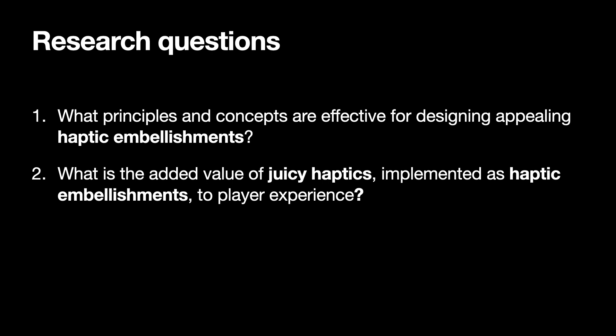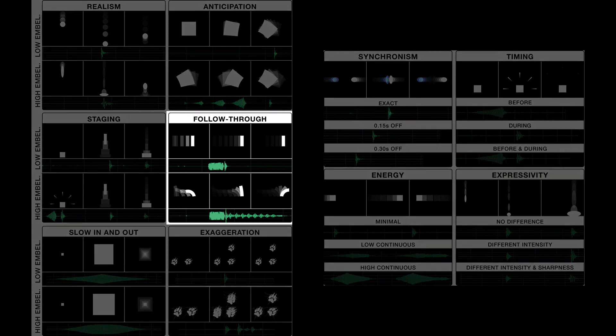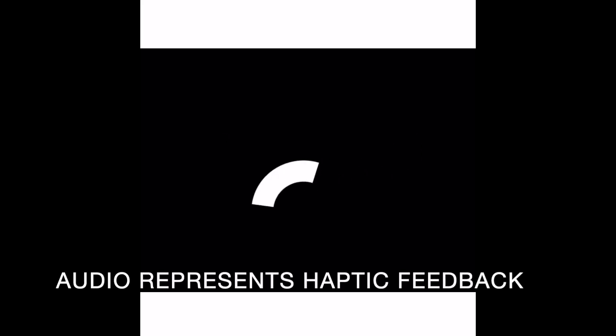For the first research question, we assemble 10 preliminary design principles for haptic embellishments. Here is a glimpse of examples of all 10 principles, but please see the full paper for more details. For concreteness, we will dive into one of the principles — follow-through — and focus only on its haptic component. Here is an example of a follow-through visual clip with no haptics. Now we add simple haptic feedback that does not follow-through. Finally, we add haptic feedback with follow-through.